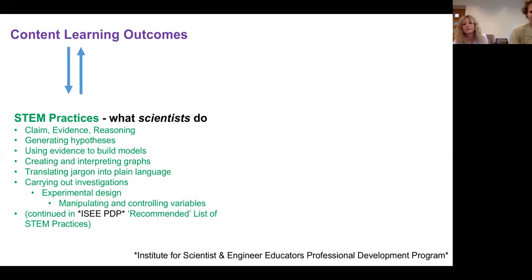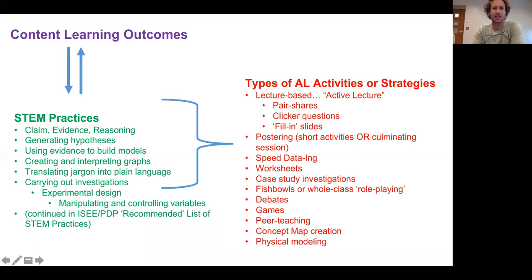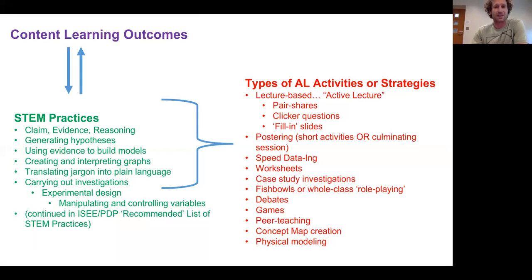With this model where we take a content learning outcome and a STEM practice to come up with an activity, there are many types of activities you can do. For a class to be dynamic, you want to change it up and not just have worksheets every time. Examples of lecture-based active learning include pair shares — having students interact with each other, think and discuss something — which is a great way to make your slides interactive. Clicker questions are also a common way to do this. With smart projectors, you can also have slides that aren't completely annotated and have students get up and work on the projectors, adding information to figures.